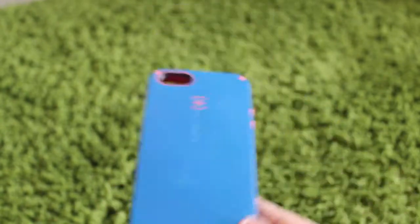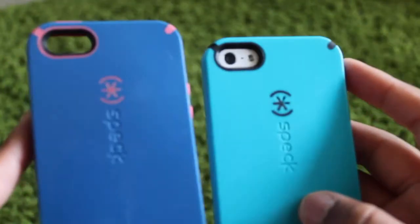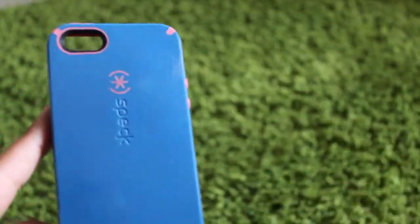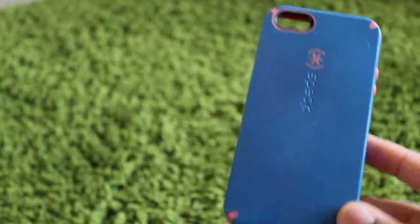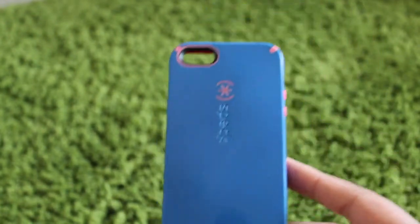And I have another Speck Candy Shell except this one, unlike the one that's on my phone, this one is blue and red instead of blue and black. And this is more of a navy blue than a baby blue, like the other one that I have.